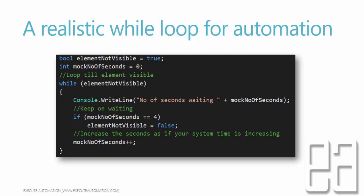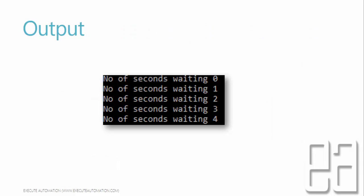I'm intentionally incrementing mockNumberOfSeconds to simulate system time increasing. The loop increments the value to 1, 2, 3, and when it reaches 4, the if condition executes and elementNotVisible becomes false. Once it's false, the while loop does not execute — it exits the loop and prints the output. The output starts at 0 and prints up to 4; it will not print 5 because the loop has been exited. That's how you perform a while loop operation in C#.